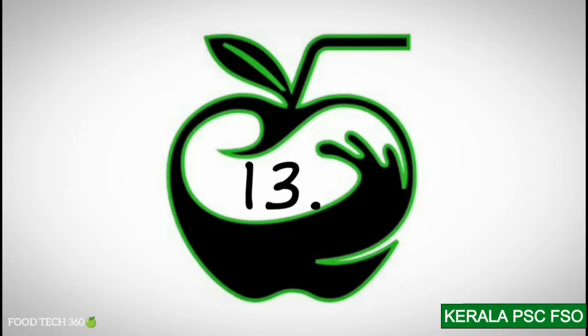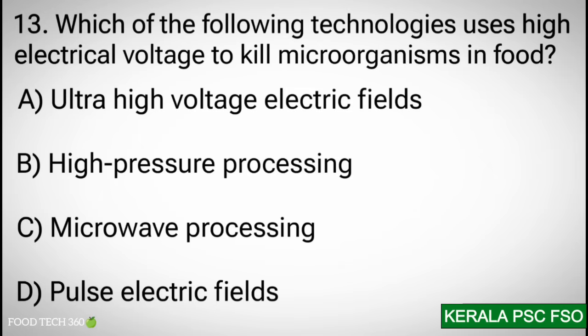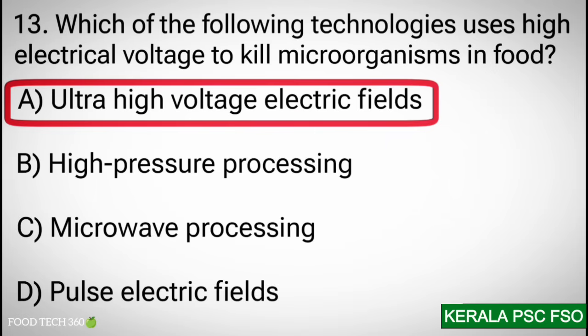Question 13: Which of the following technologies uses high electrical voltage to kill microorganisms in food? Options: a) ultra high voltage electric fields, b) high pressure processing, c) microwave processing, d) pulsed electric fields. Correct answer: a) ultra high voltage electric fields.